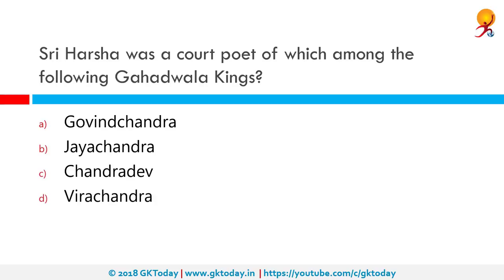Shri Harsha was a court poet of which among the following Gahadwala kings? Shri Harsha was a 12th-century Sanskrit poet from India. His father Shri Hira was a poet in the court of Gahadwala king Vijay Chandra. Shri Harsha composed the poem Naishadha Charita in 1174 during the reign of Vijay Chandra's son Jai Chandra. The correct answer is Jai Chandra. Upon the wide acceptance of Naishadha Charita, Shri Harsha was dignified with the title of Narabharati.